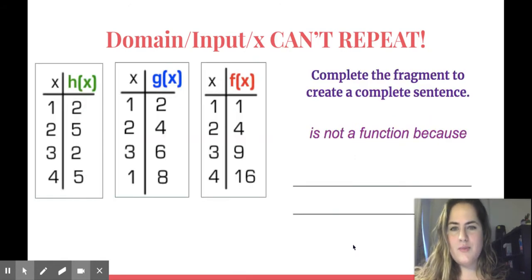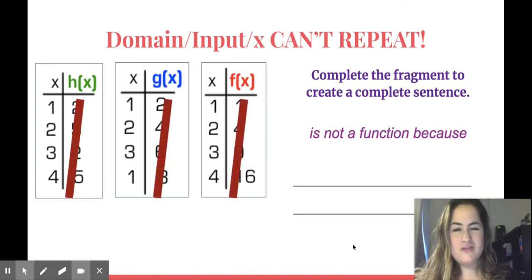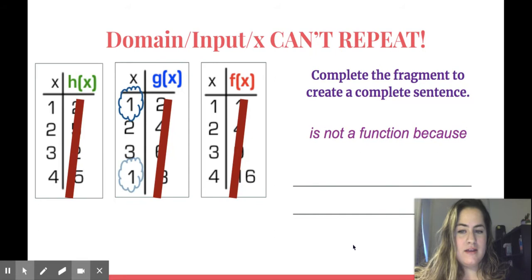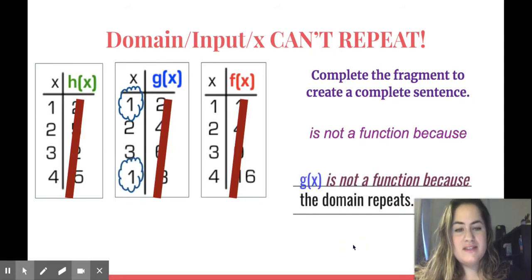So let's look at this as a table. If the rule is X can't repeat, I don't care about my Y values. So I'm going to go ahead and cross those out. Let's say I have to complete the fragment. It's not a function because... Let's see if we can find the table where the X values repeat. In the middle, G of X, I see that one repeats. So I'm going to say that G of X is not a function because domain repeats.